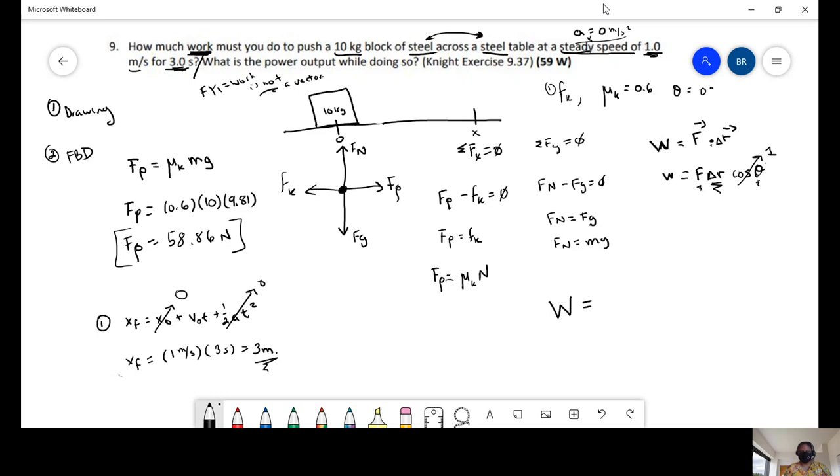So cosine of zero is 1. So we have the force 58.86 times the distance 3 meters. So this is going to give us 58.86 times 3, which equals 176.58 joules of energy. Perfect. So we found the work applied.